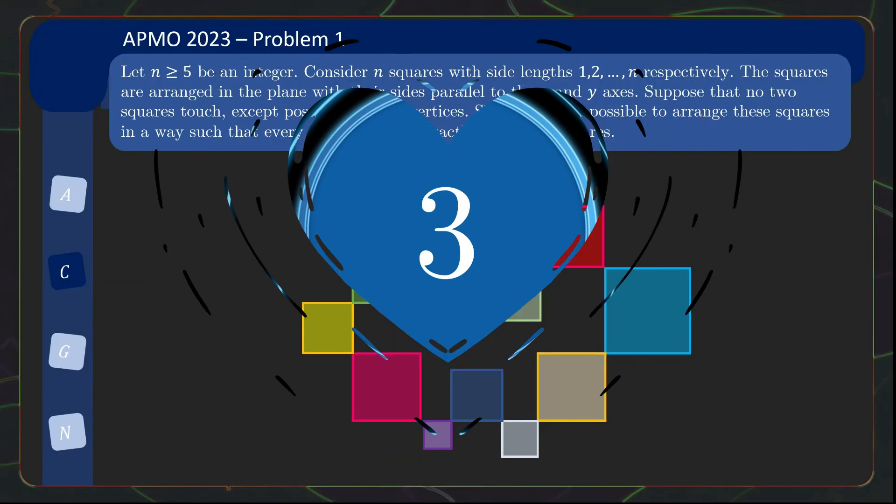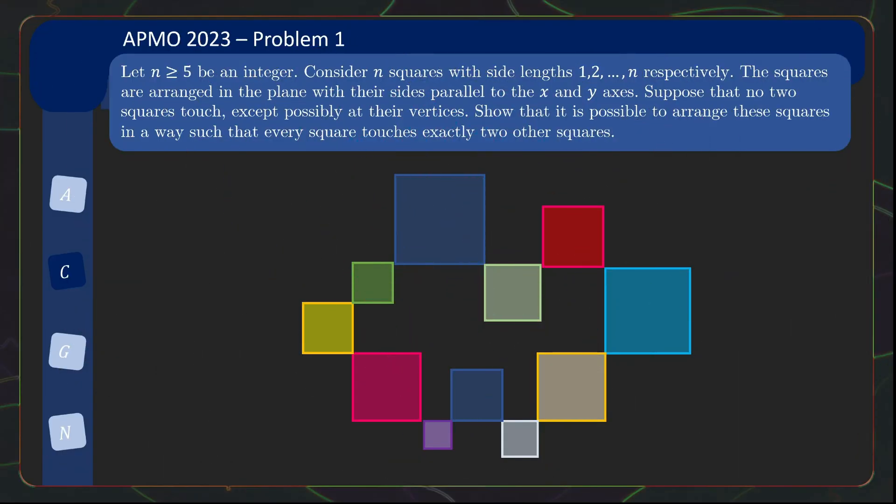Coming in 3rd place is problem 1 from the Asia-Pacific Math Olympiad. In this problem, we are given squares of side lengths 1 to n, and we need to show that it is possible to arrange the squares in an axis-aligned manner such that every square touches exactly two other squares at their vertices.